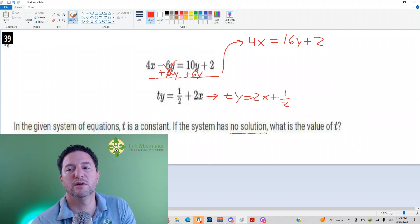To get y alone, you subtract 2 from both sides. Here we cancel, get 4x minus 2 equals 16y.